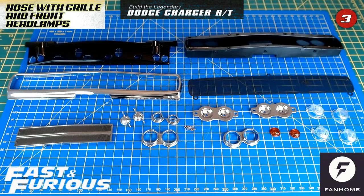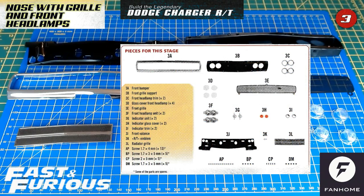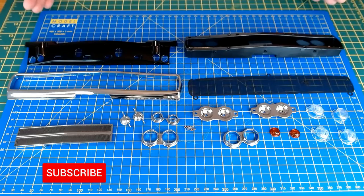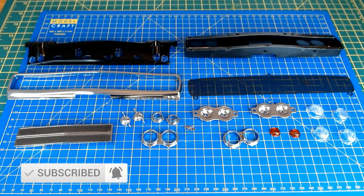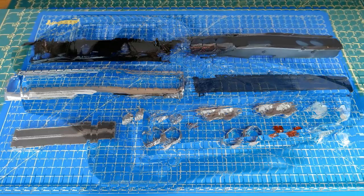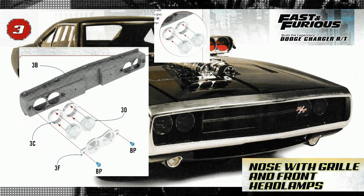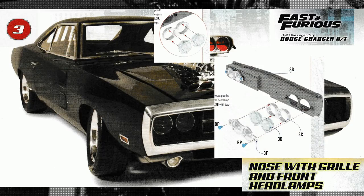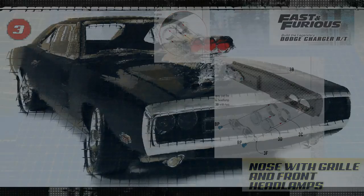Okay, so the parts laid out here for issue number three of the Fast and Furious Dodge Charger. It's going to be quite an interesting one because we're getting this front section, which is the iconic part of the car with the nose section constructed with the lights and everything. I've checked all the gold screws off. Looking forward to this - the construction of issue number three.